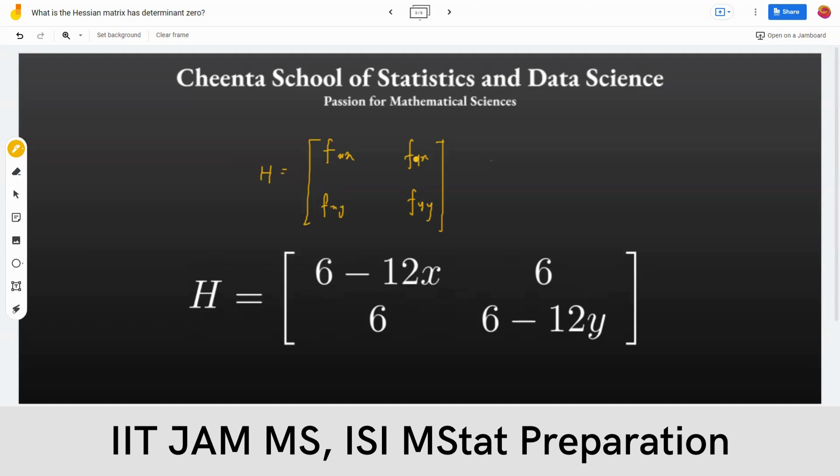But let's come here. Observe that if you calculate here, generally in this functional case, f of x comma y, the given function, you will get this corresponding Hessian matrix at the x, y point.